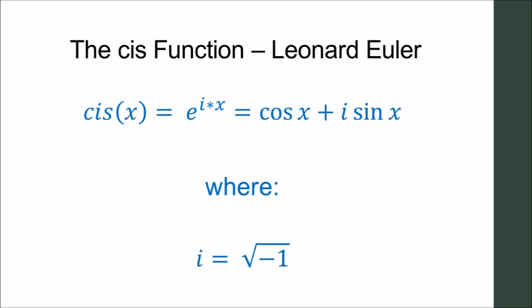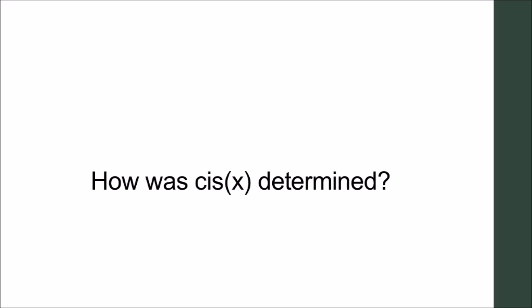We start with the cis function, noted by CIS. The result of the cis function is a complex number. The cis function is commonly written as e to the i times x, where i represents the square root of negative 1. e to the i times x is equal to cosine of x plus i times the sine of x. How was the cis function derived?